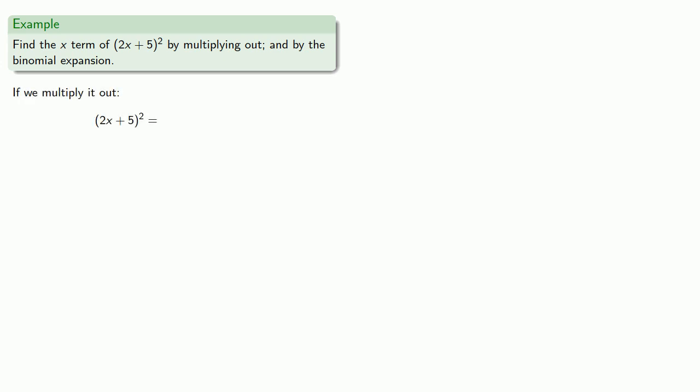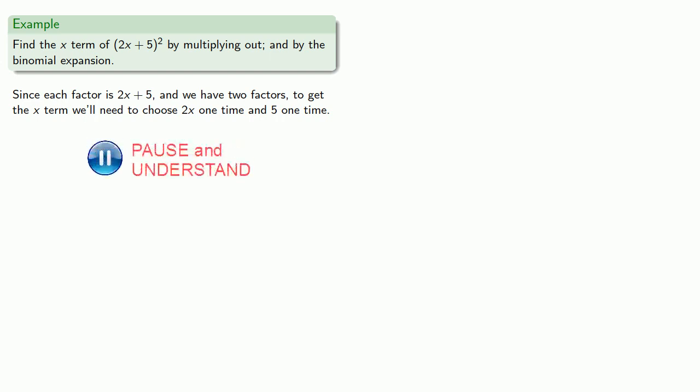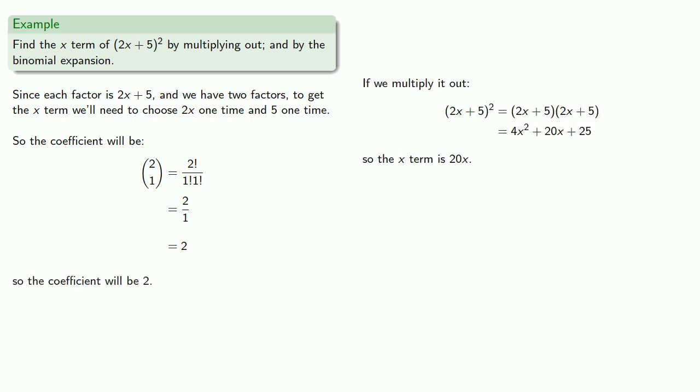If we multiply out, we know how to do that, and we find our x term is 20x. In the binomial expansion, since each factor of our square is (2x + 5) and we have two factors, to get the x term we'll need to choose 2x one time and 5 one time. So the coefficient will be (2 choose 1), which is 2, which is what we got the last time. Well, 0 is nothing, so 2 and 20 are the same thing. What's going on here?